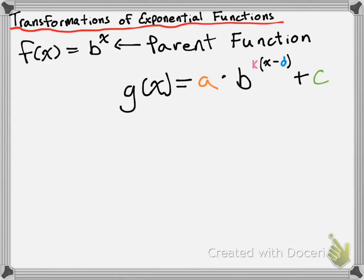Now, the way that we got that is we could apply the function notation, but we went through how to do that in class, so I don't feel like we need to do it in the video. Just like from the last unit, the a, k, d, and c values are going to tell us what transformations are going to occur, and those parameters follow the exact same rules as the last unit.